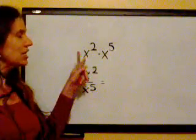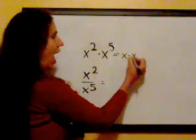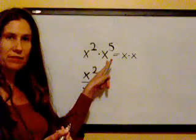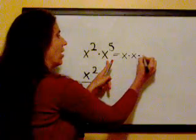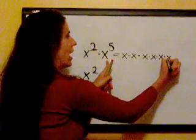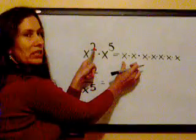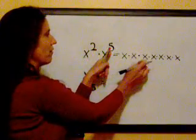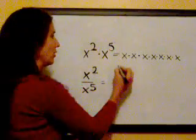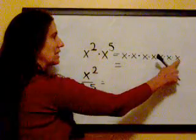So x to the second means x times x, times x to the fifth — that's five x's: x times x, times x, times x, times x. So this is x to the second — two x's — times x to the fifth — five x's. Combining and simplifying that, this is x to the seventh.